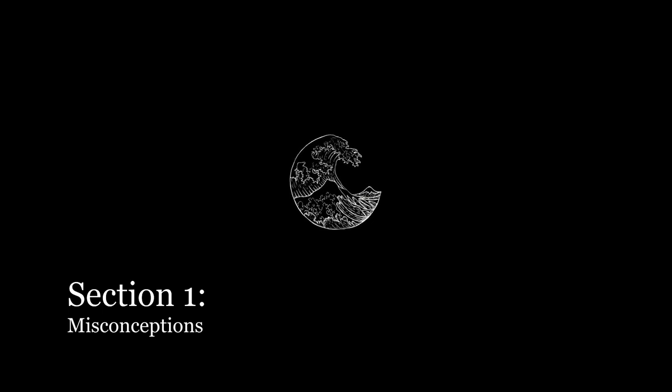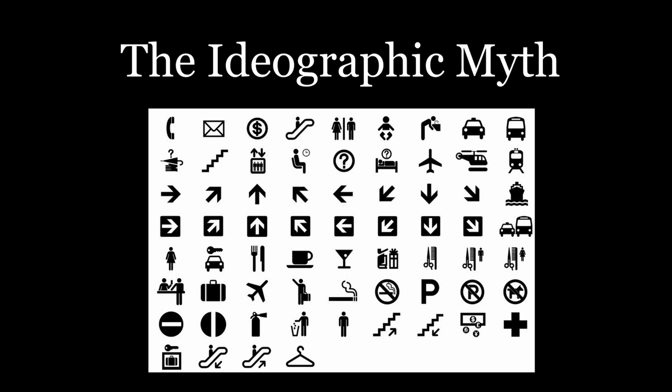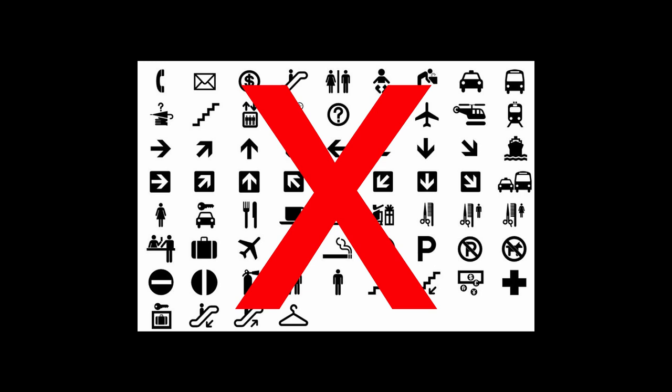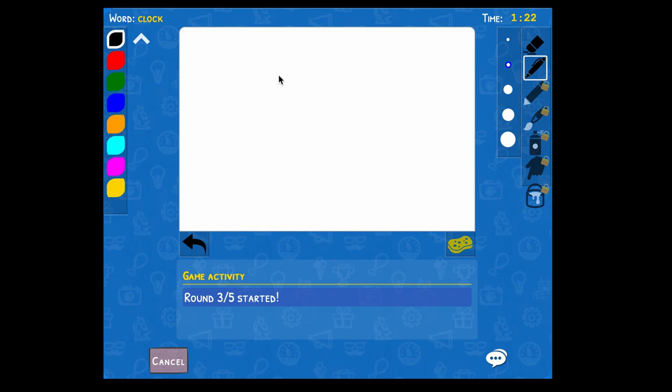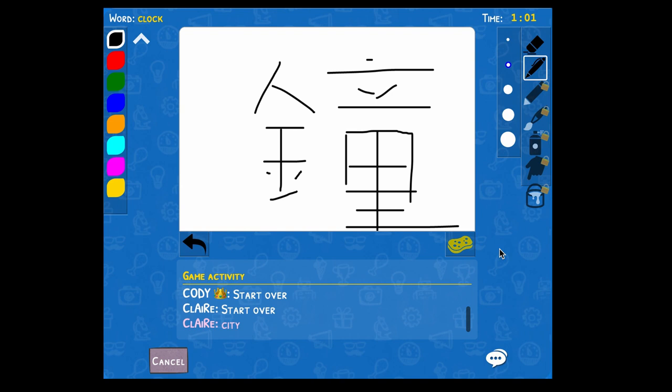There are two prevalent misconceptions surrounding classical Chinese that must first be addressed. The first is the ideographic myth — that Chinese characters are only simple ideograms or pictograms. It's true that classical Chinese uses a logographic script where a single character represents a word, unlike how in English one must string together multiple letters to make a word. But these characters are rarely ideograms blatantly reflective of their meanings. To put it to a quick test, I tried to play a round of Pictionary using a classical Chinese character — safe to say, no one had any clue that the character meant clock.